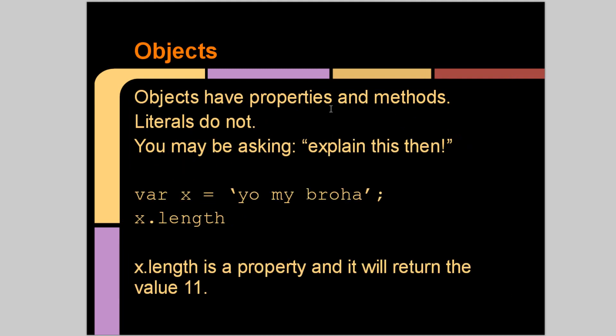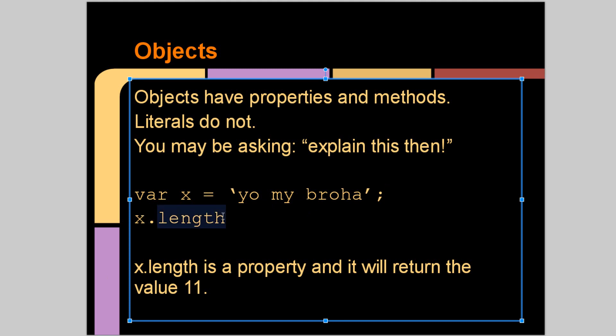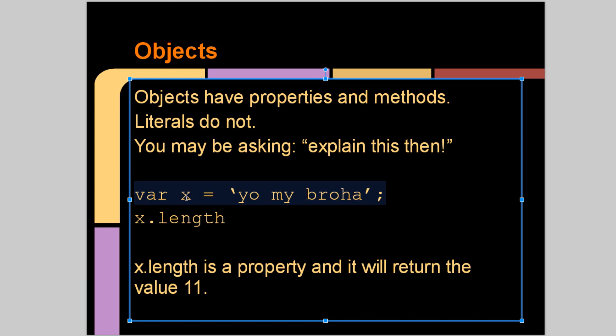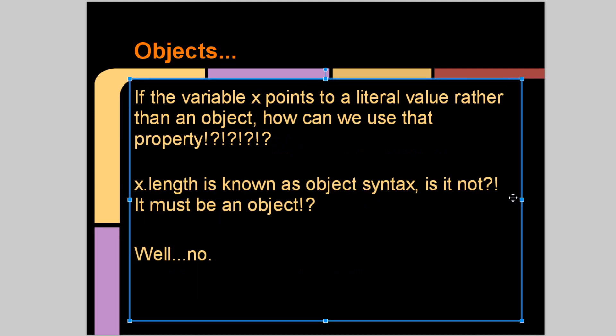Objects have properties and methods. Literals do not. So as you can see, you may be asking, explain this then. We're declaring a variable x and assigning it the value "yo my bro ha" whatever that means, and then we use a property x.length. It's going to return a value 11. Well, this length is a property, and as I said earlier, this is a literal. So how is it that this literal value has a property that we can use such as length? If the variable x points to a literal value rather than an object, how can we use that property?